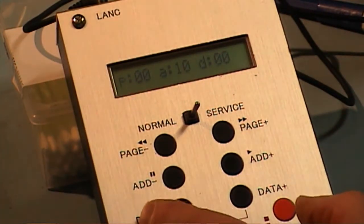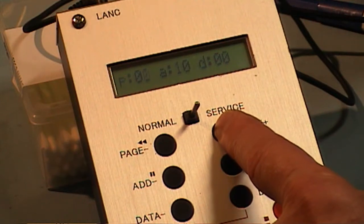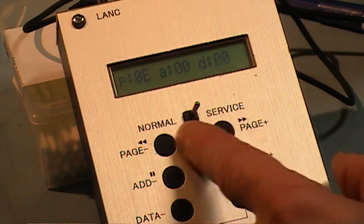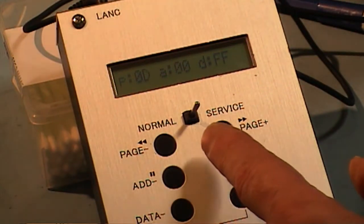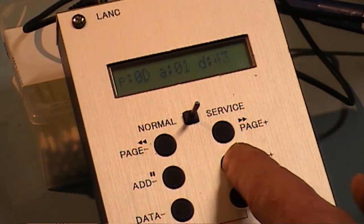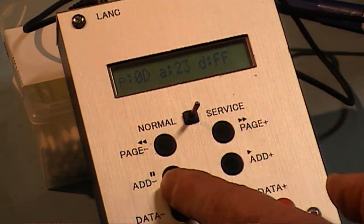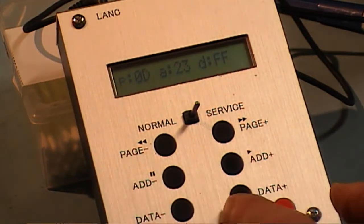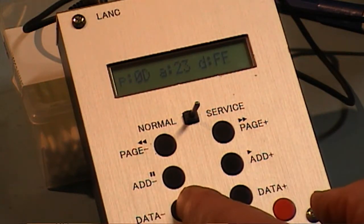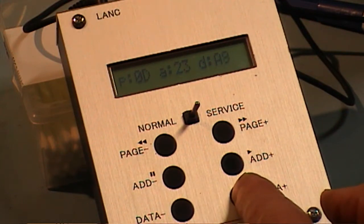So now we go to page D so we can use our page buttons to change it to page D, and go to address 23, and change the data in that to AF.